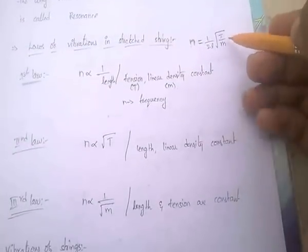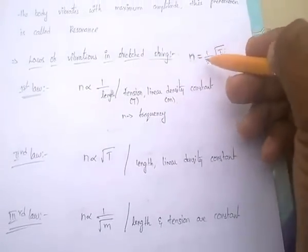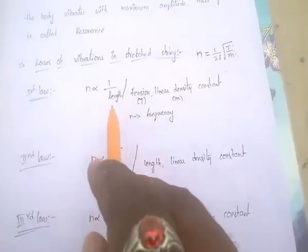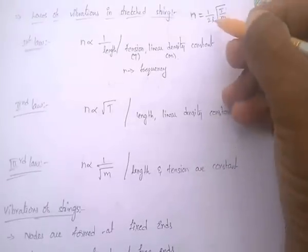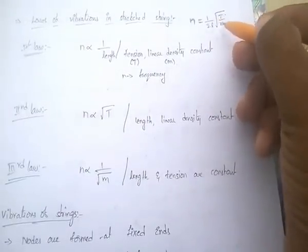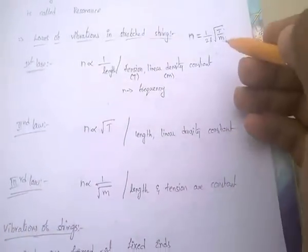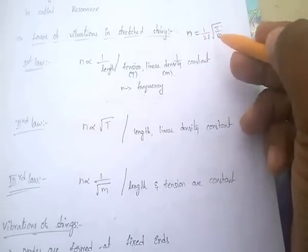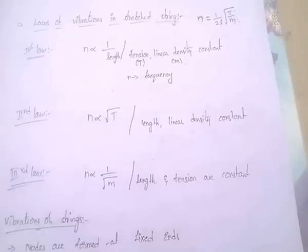The second law states that when length and linear density are constant, n is proportional to the square root of tension T. The third law states that when length and tension are constant, n is inversely proportional to the square root of linear density m, i.e., n ∝ 1/√m.